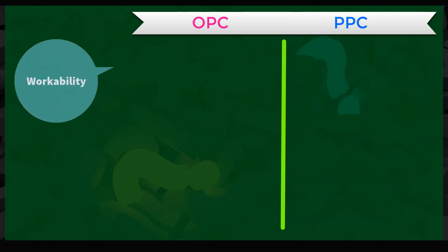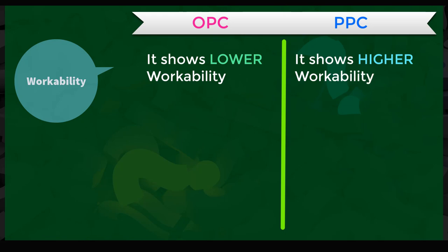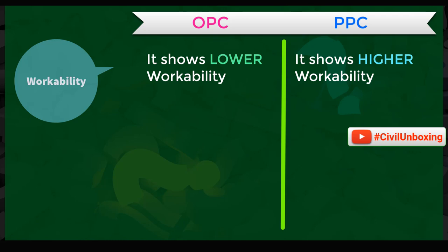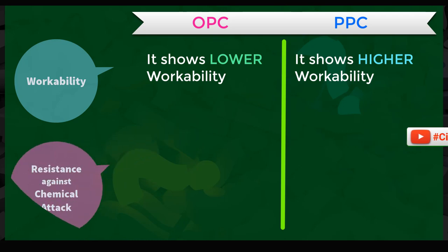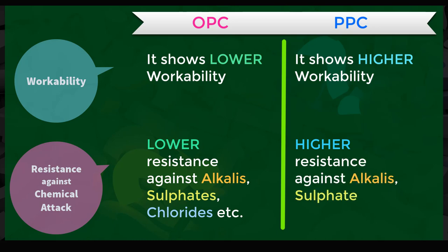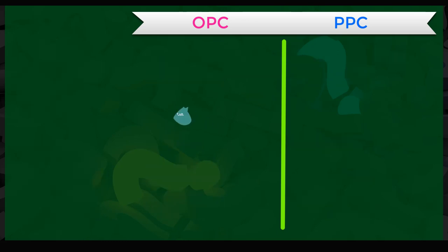With respect to workability, OPC shows lower workability whereas PPC shows higher workability, so ease of doing concrete work is favorable with PPC. On resistance against chemical attacks, OPC has lower resistance against alkalis, sulfates, and chlorides, whereas PPC has higher resistance against these, making PPC more suitable for underwater and marine construction.